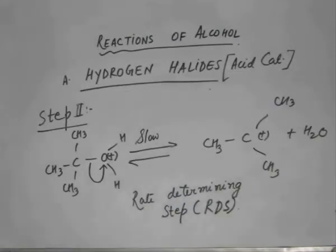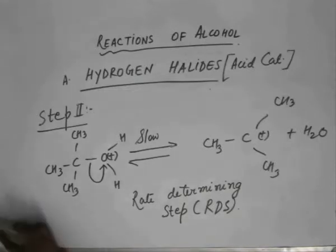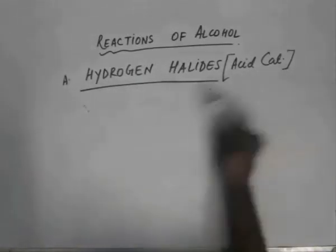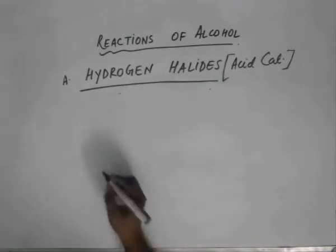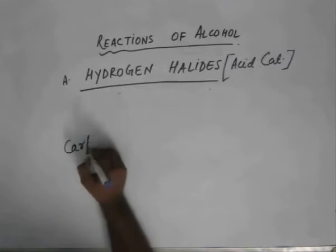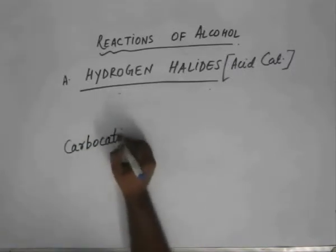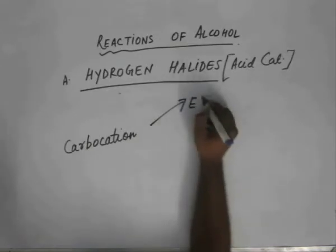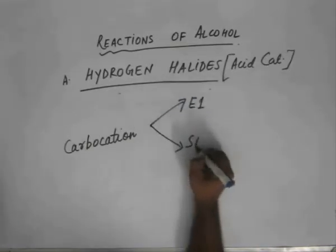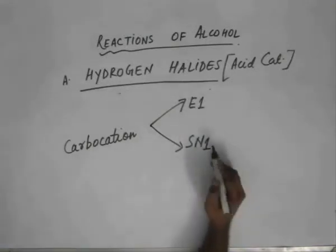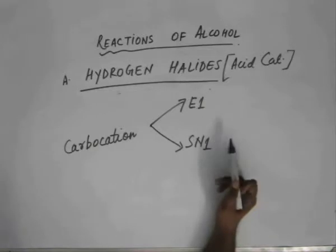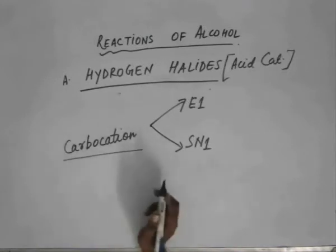RDS as we said. So a carbocation is generated in this case. This is the rate determining step. Now after this, two things can happen: elimination or substitution. After the generation of the carbocation, the reaction may take two paths — unimolecular nucleophilic substitution or unimolecular elimination. Both may take place depending upon the temperature conditions.